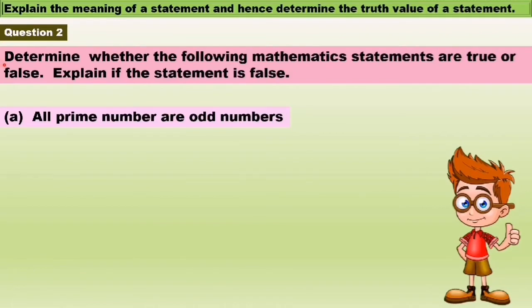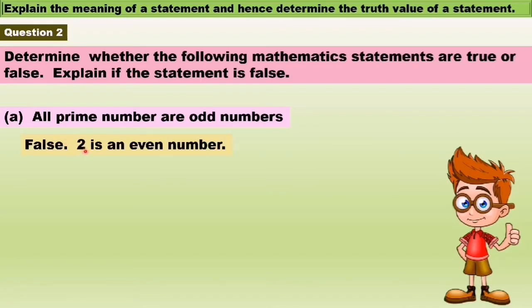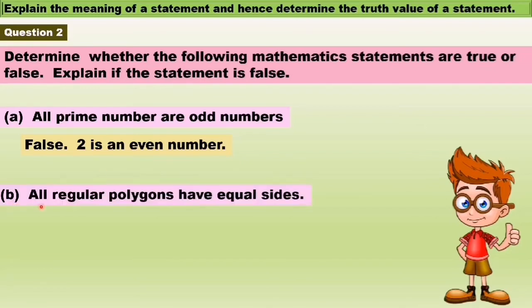Next question: determine whether the following mathematics statements are true or false, and explain if the statement is false. A: 'All prime numbers are odd numbers' — this is a false statement because 2 is a prime number but 2 is an even number. B: 'All regular polygons have equal sides' — yes, this is a true statement.